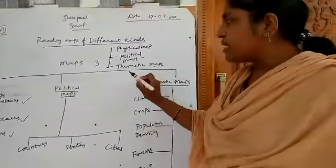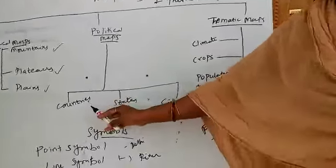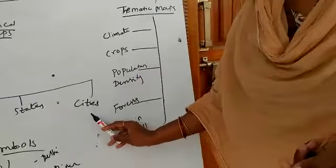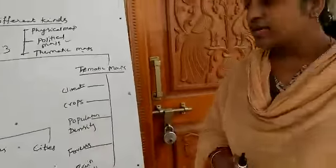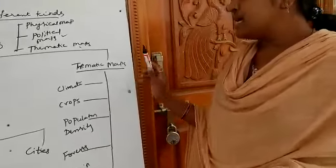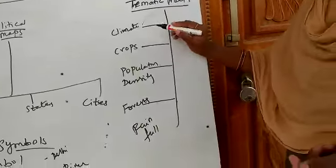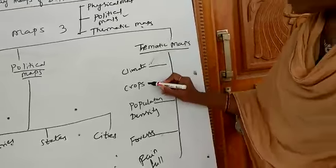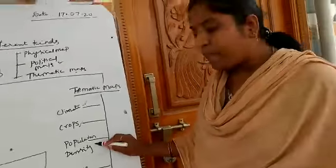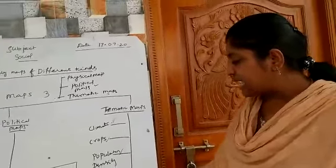Second one is the political maps. Political maps means countries — we identify the countries, states, and cities. Next one is the thematic maps. In these thematic maps, what is the climate? Climate we can identify. Next, crops and population density, forest, and rainfall — these are the five types we can identify in a thematic map.